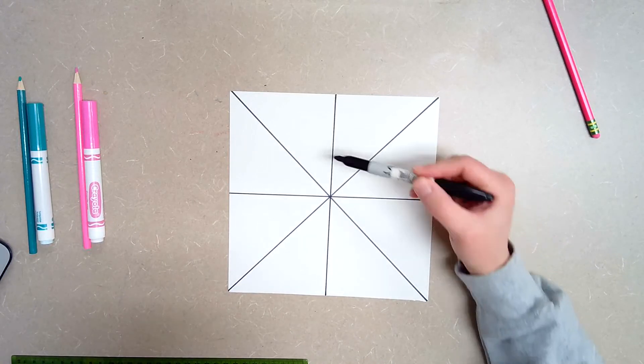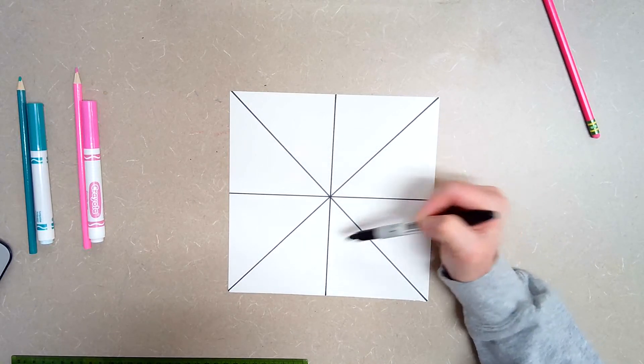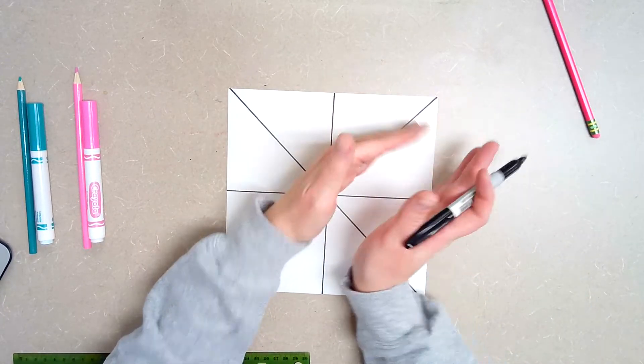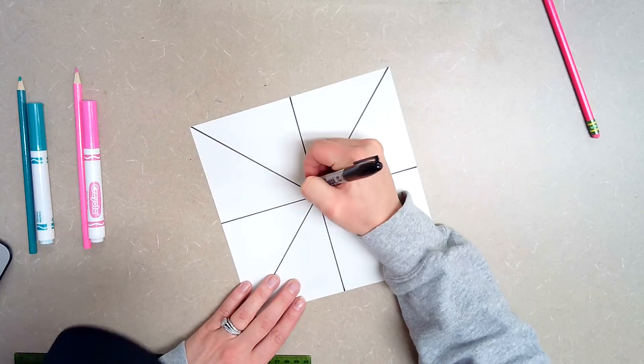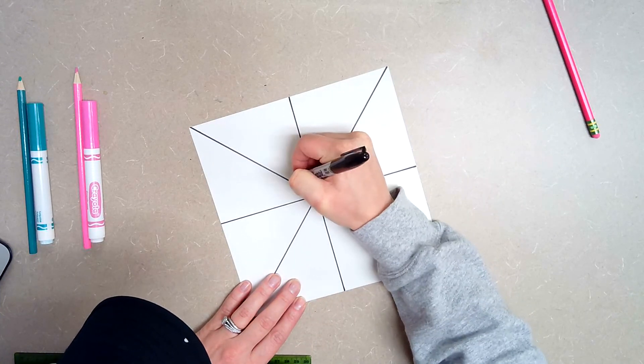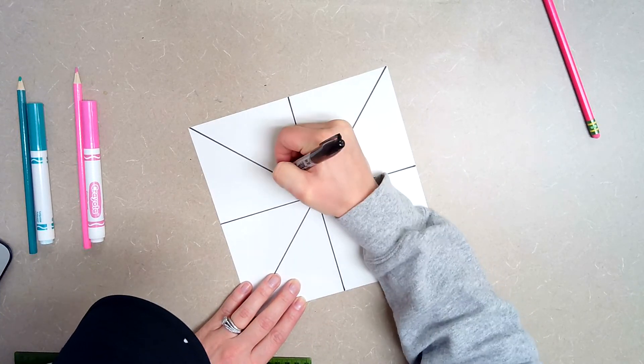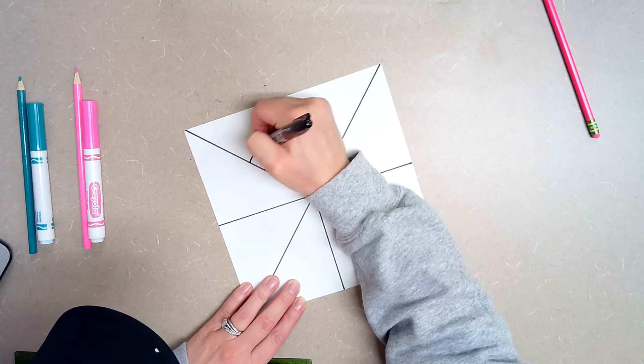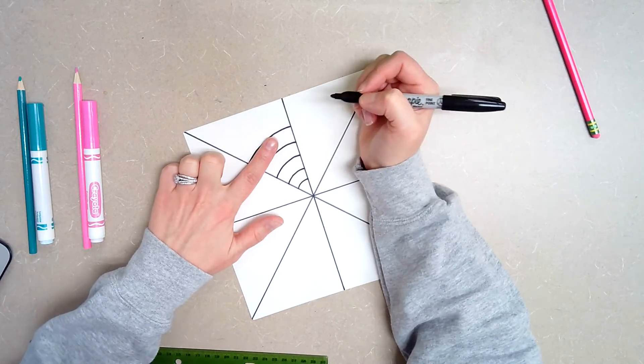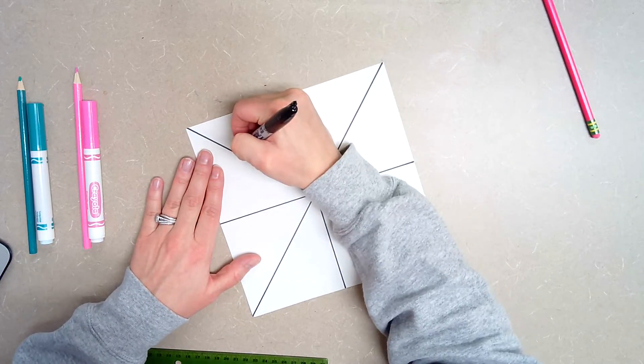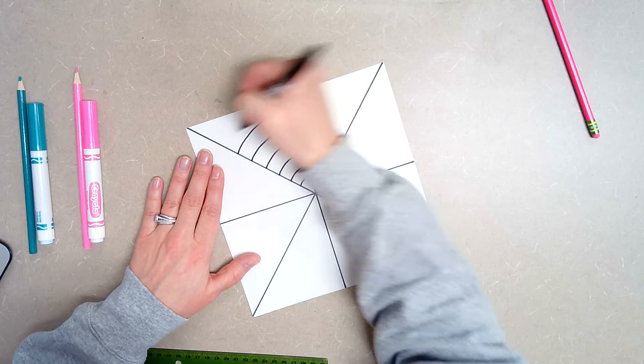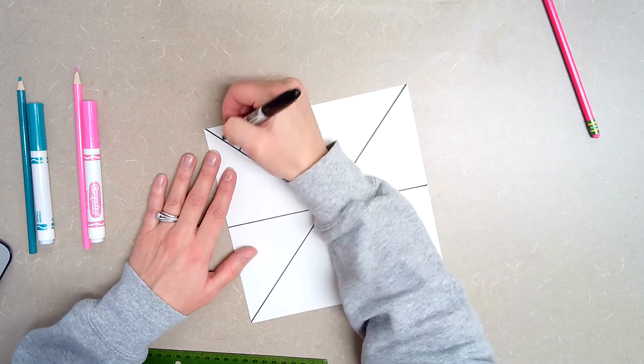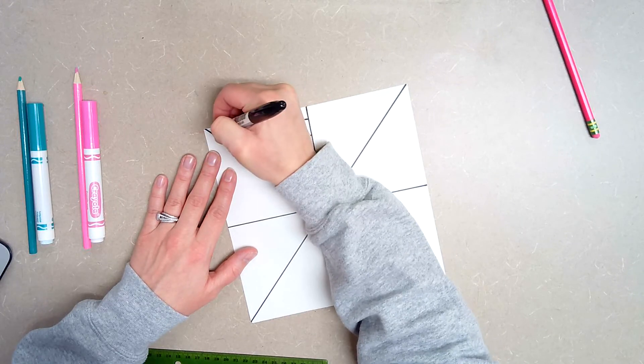Once you have this done, you're just going to pick one of your pie pieces. I like to call these pie pieces because they kind of look like pizza slices or pie slices. And what you're going to do is you're just going to pick any one and you're going to do a curved line. These lines do not touch each other. Spread them out. You should be able to fit your finger inside of them. Now when you run out of room, you just pretend and go off the edge of the paper.